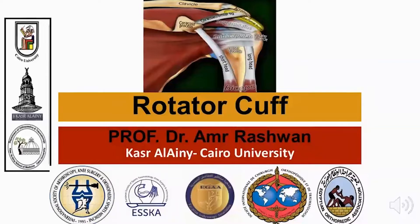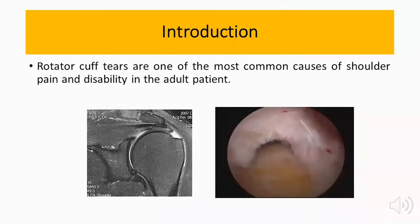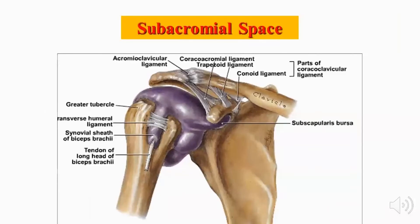Rotator cuff tears are one of the most common causes of shoulder pain and disability. We shall first understand what is the subacromial space — the area bounded between the humeral head below and the coracoacromial arch, including the undersurface of the acromion and AC joint above.